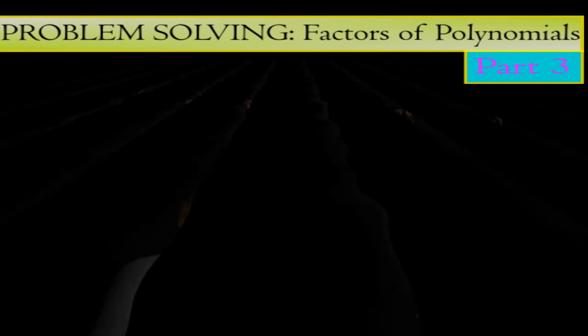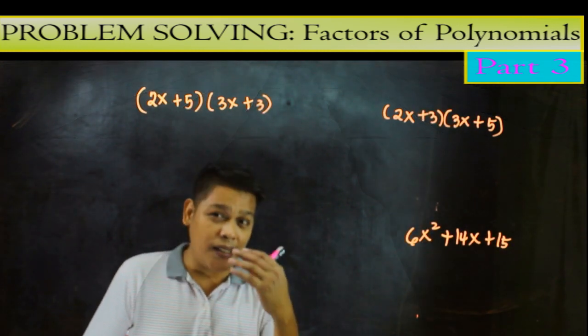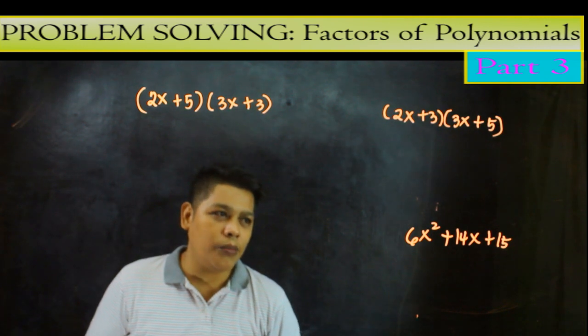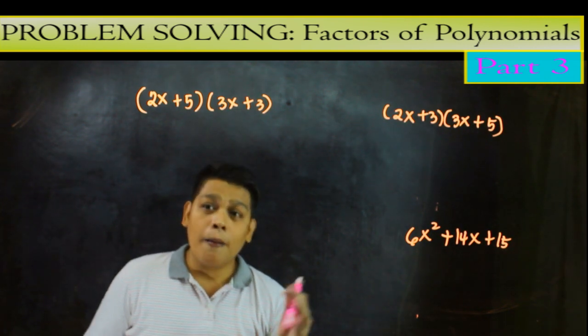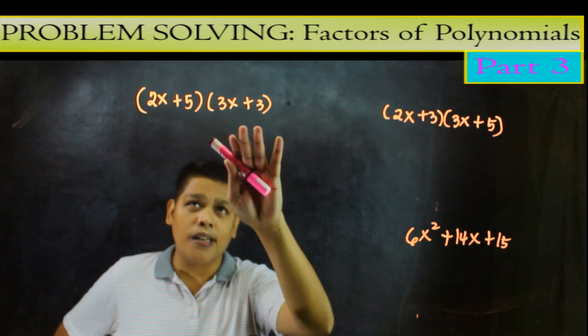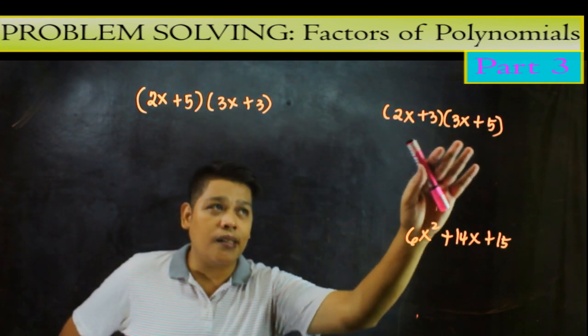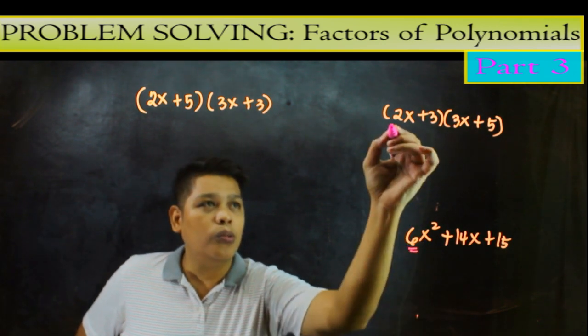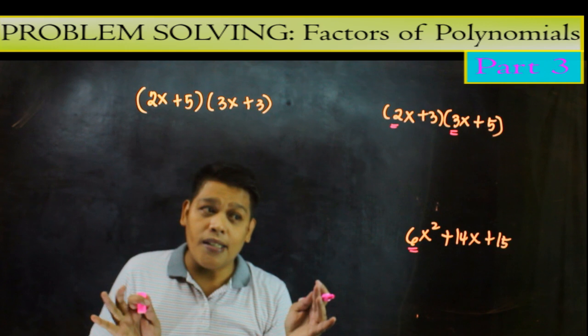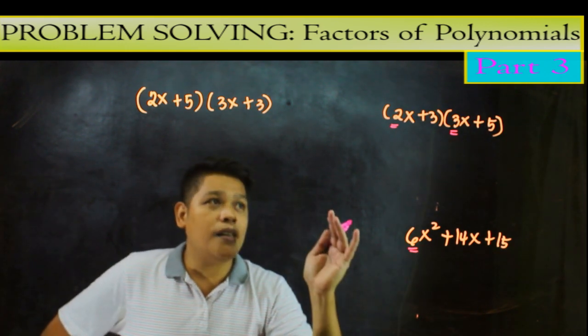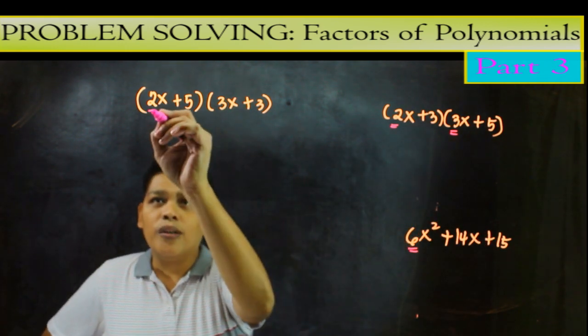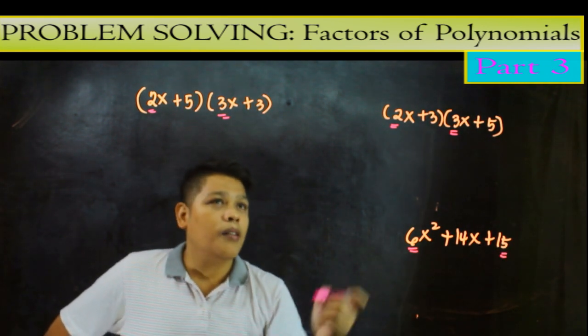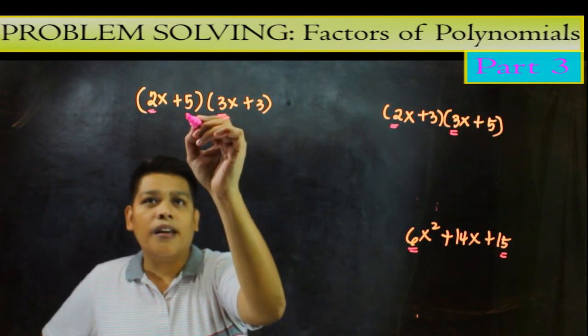Before we proceed to number 2, tingnan muna natin ito para kasi baka mali po kayo. So in our polynomial 6x squared plus 14x plus 15, may factor to na 2x plus 5, then 3x plus 3, 2x plus 3, and 3x minus 5. Paano nakuha yung factor nito? Ipapactor muna natin yung 6. Ito yung 2 and 3, ihiwalay natin yan yung 6. Pwede rin namang, yan, na 2 and 3. So yung 15, gano'n din, yung 15, ihiwalay din natin yan. Yan yung 5 and 3. 5 and 3.